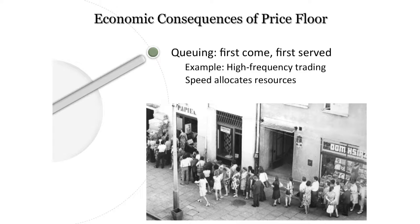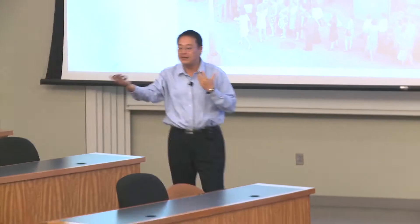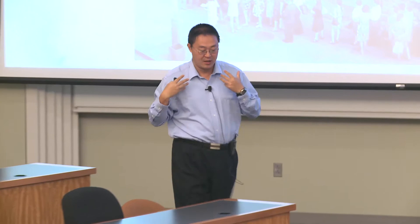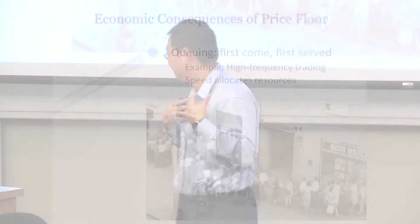What is high-frequency trading? One important aspect is: suppose Eric and I are both willing to provide liquidity at one cent. Eric happens to be faster, so he has time priority — he provides the liquidity and I get crowded out.